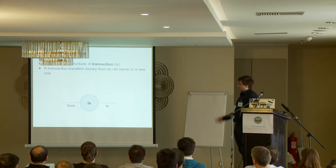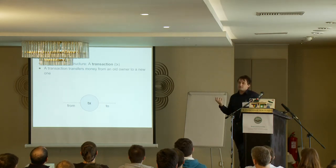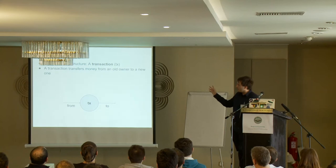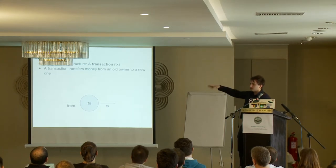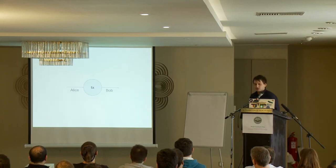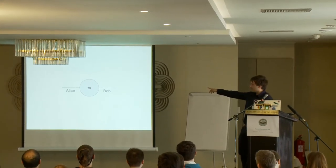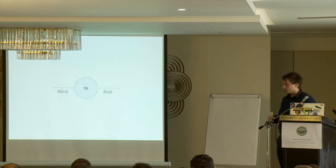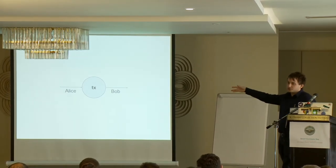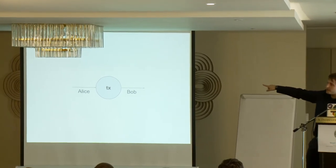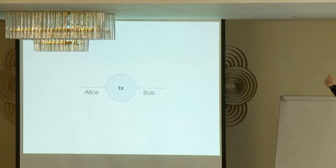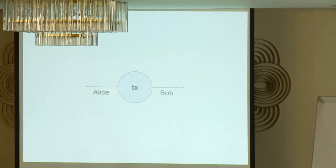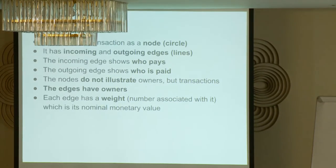In Bitcoin, we have a thing called a transaction — that's the primitive unit of Bitcoin. In my slides, I will draw transactions as circles with edges on the left or right to show inputs and outputs. So here we have a transaction that transfers money from Alice to Bob. Alice is paying into this transaction on the incoming edge, and Bob is getting money out on the outgoing edge. Each transaction edge has a value associated with it.